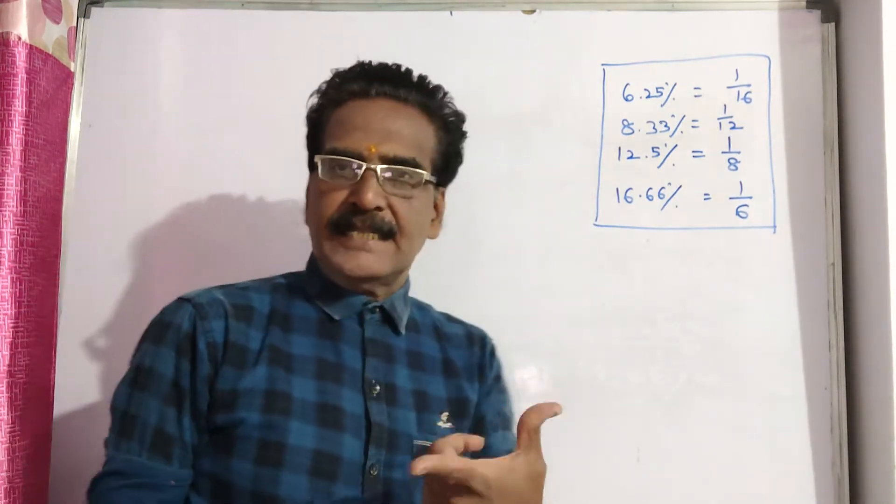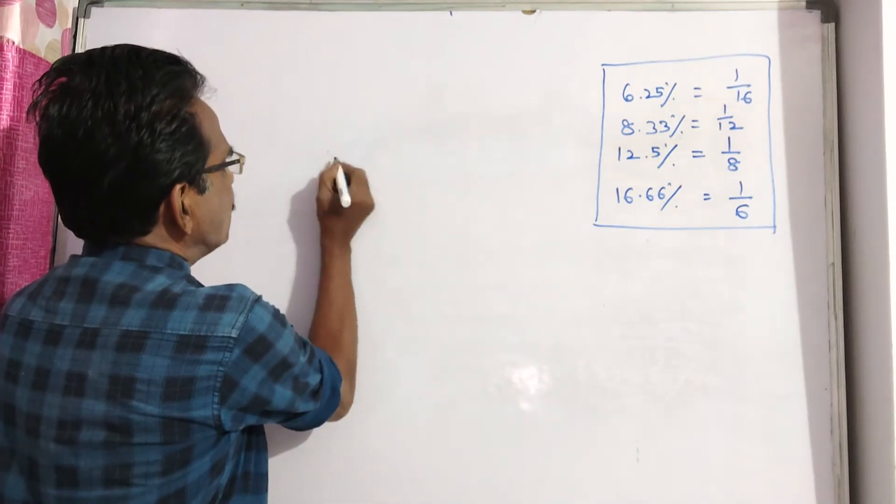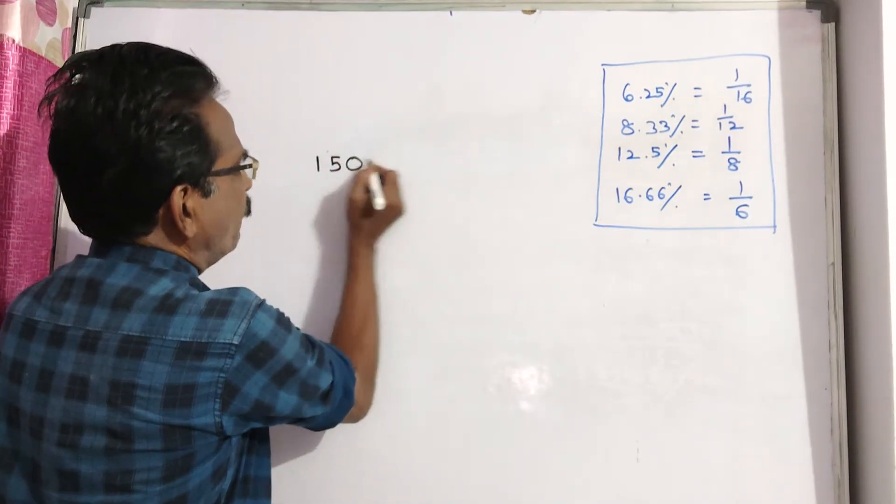Friends, say X percent is the first discount. Now, the marked price or list price is Rs. 150.